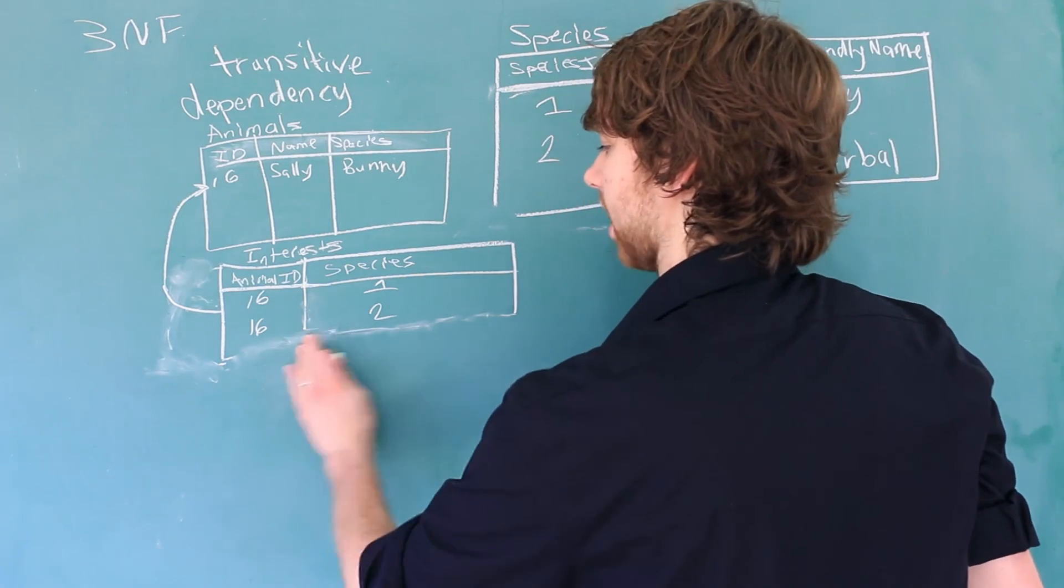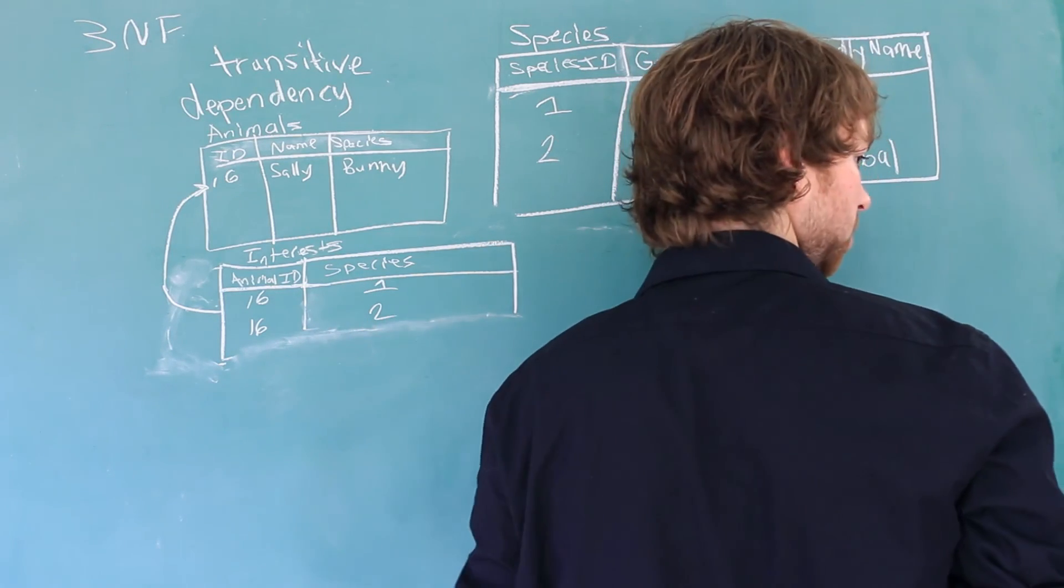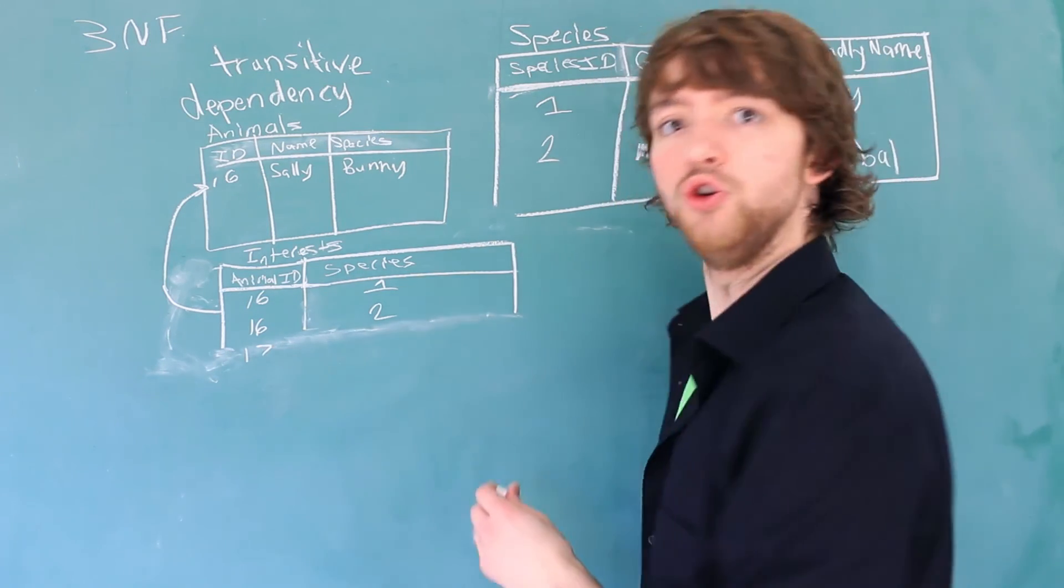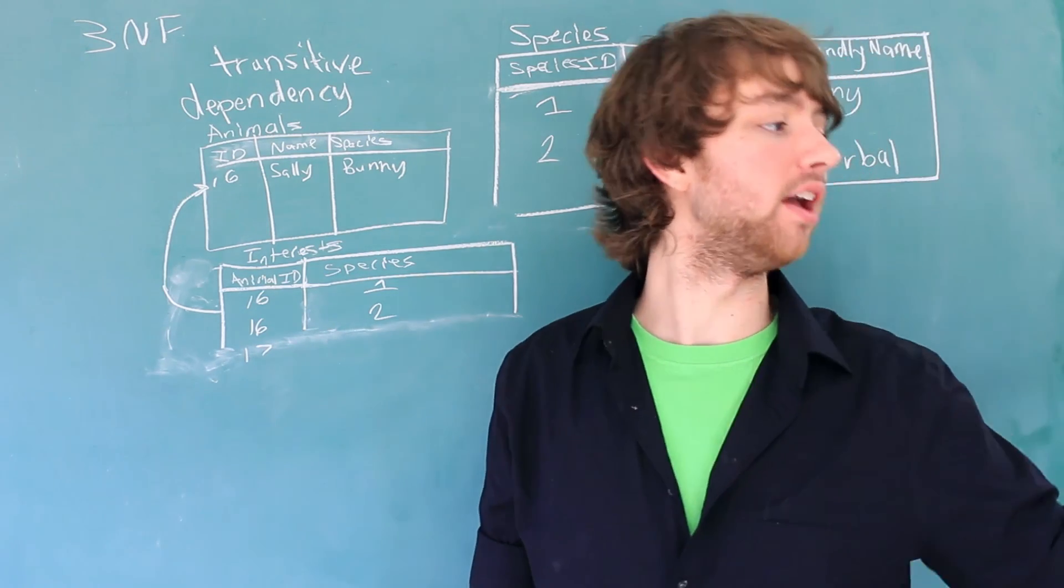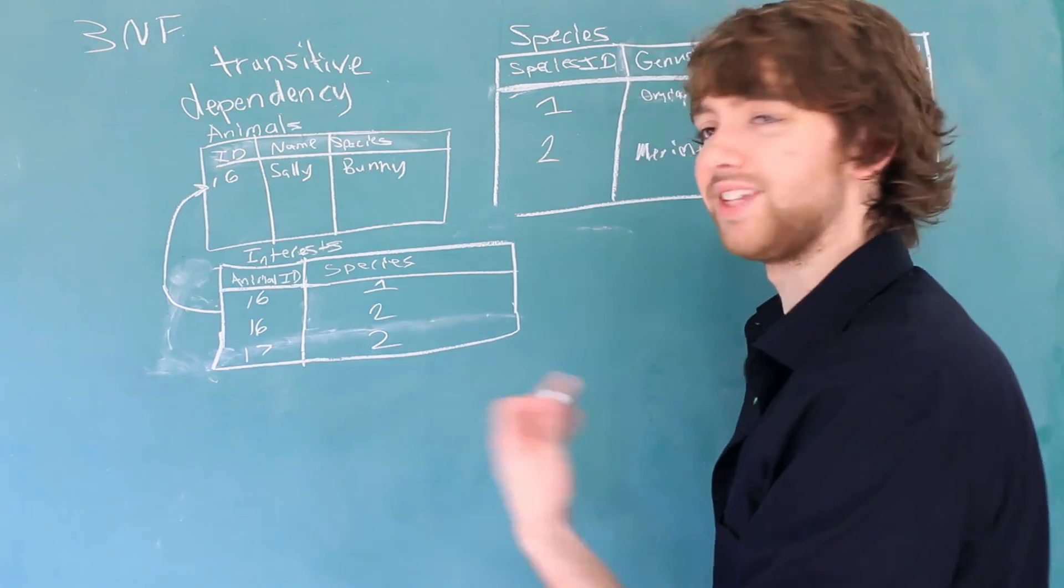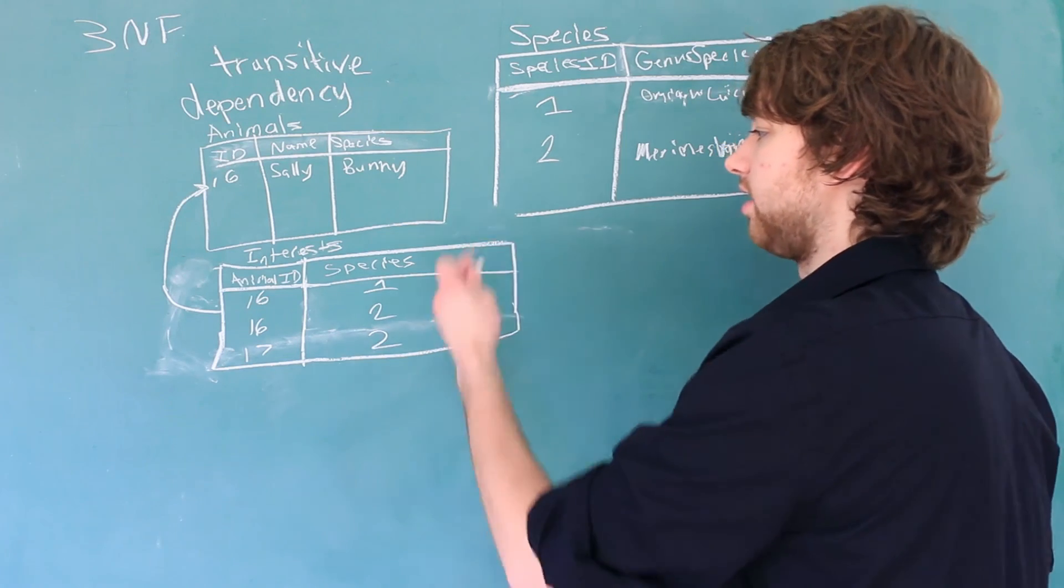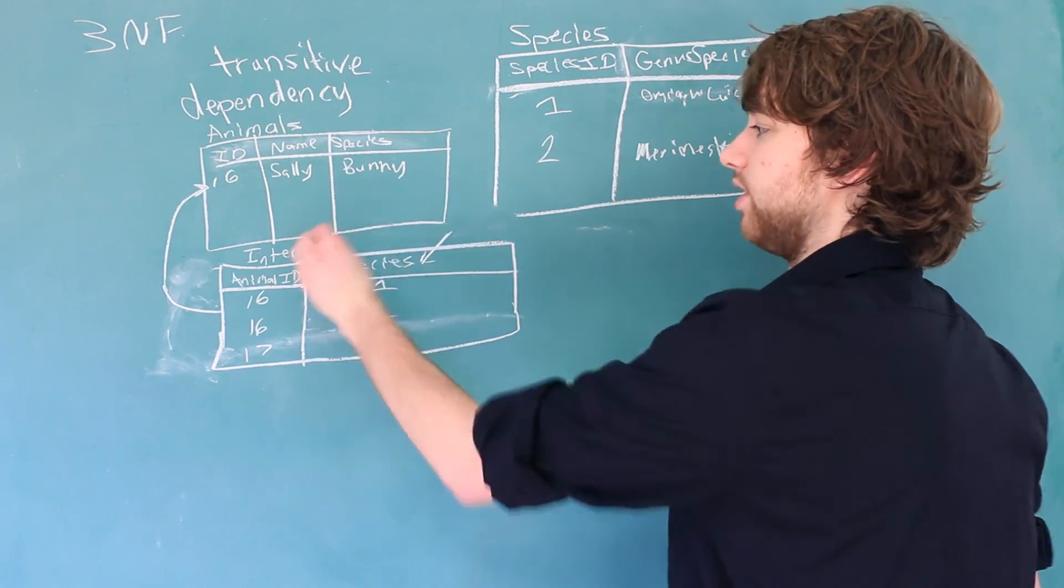And if by chance we were to add more rows to this, all we would do is just add one of our species. Onyx, would you be quiet? Gosh! So we can say seven... Oh noob! I love you, but be quiet. So we can say 17, two.